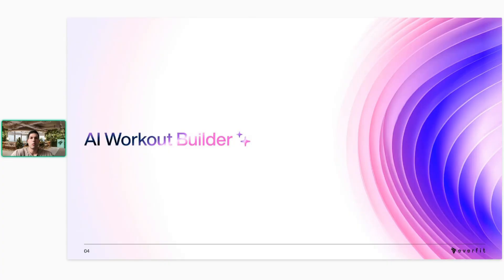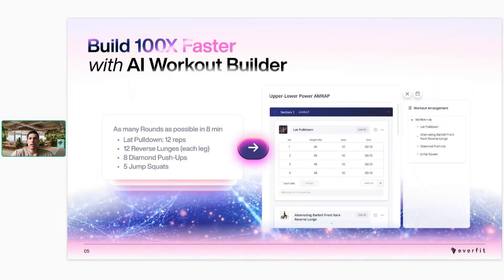Starting off with the AI workout builder — we added this feature a couple months ago. It allows you to copy and paste any prompt into the AI and it'll turn it into an Everfit-built workout. If you're coming from training clients over Excel sheets or Google Docs, this feature will save you so much time in onboarding and uploading content. Instead of typing out each exercise and dragging and dropping, you can just copy and paste workouts directly into the AI.